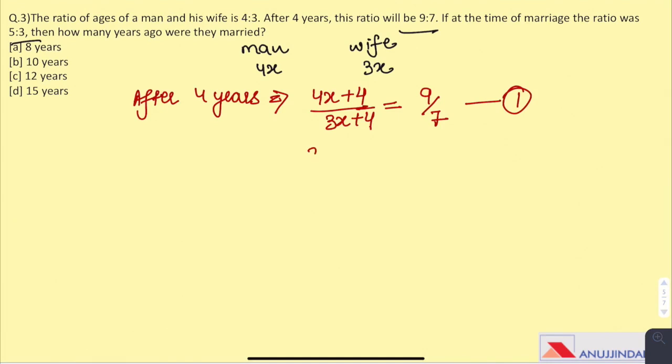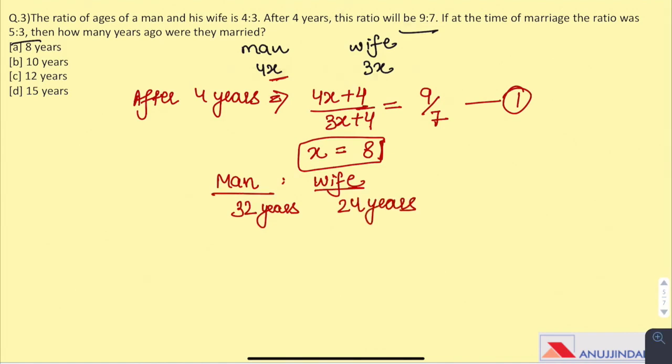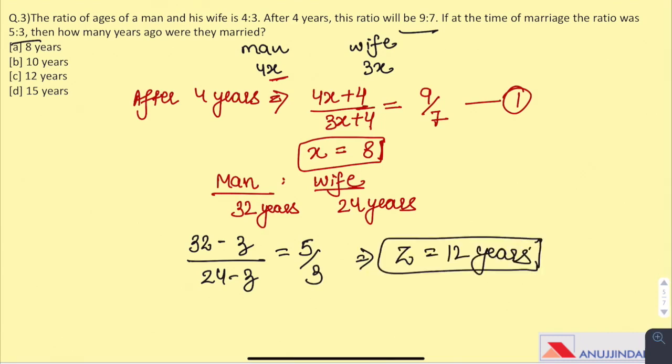On solving equation 1, we get that x equals 8. And putting the value of x here, the age of the man and wife comes out to be 32 years and 24 years respectively. And now, as per the question, their ratio at the time of their marriage was 5 is to 3. So, let us suppose they married z years ago. So, 32 minus z over 24 minus z would be equal to 5 is to 3, which gives us z equals 12 years.